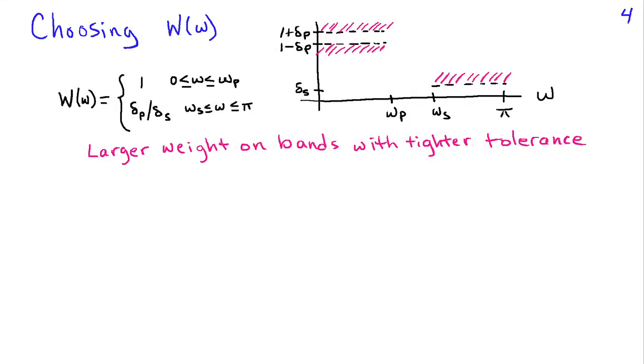Now in general, we don't want the error in the pass band and the error in the stop band to be identical. We may have a tolerance diagram that says that in the pass band I can tolerate ripple between 1 minus delta P and 1 plus delta P, but in the stop band I have to have attenuation specified by delta S. And these two ranges, delta P and delta S, are not necessarily going to be equal.